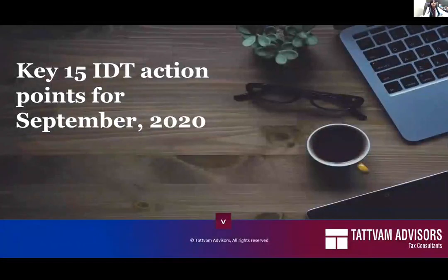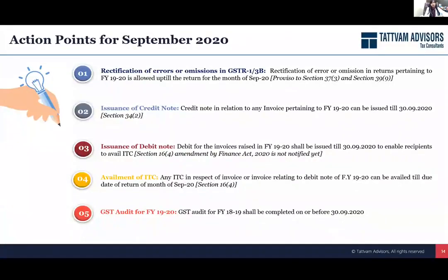Then move on to the next section, which is on the key 15 IDT action points for September. September has already been halfway through, and there are a lot of things required to be done this month. It's a quick snapshot of what all needs to be done so that you don't miss any timelines, you don't miss the bus for taking credits, or any reportings or rectifications that could be done in your returns.